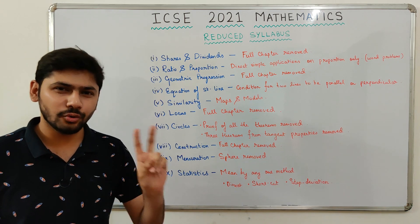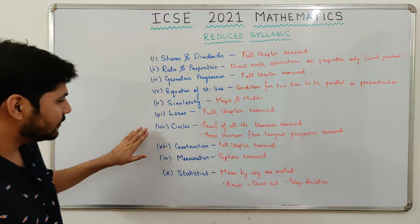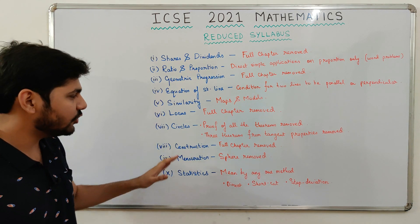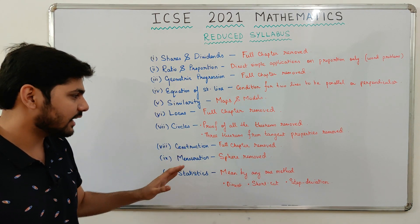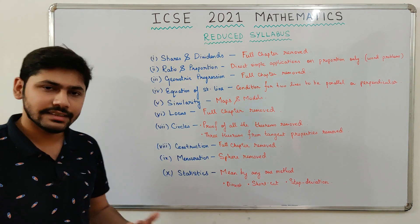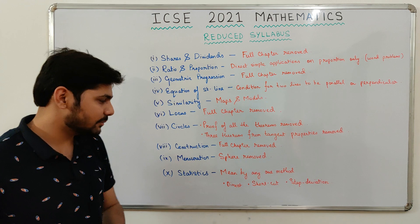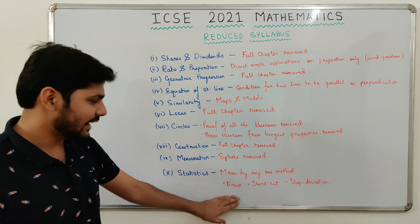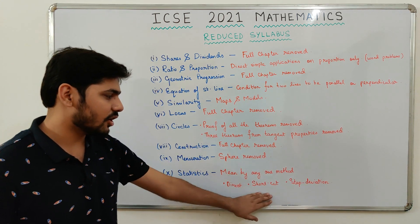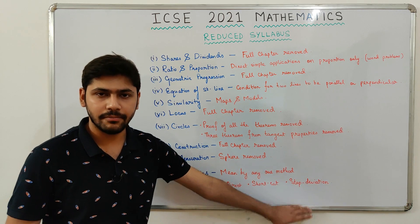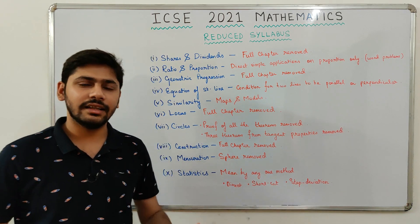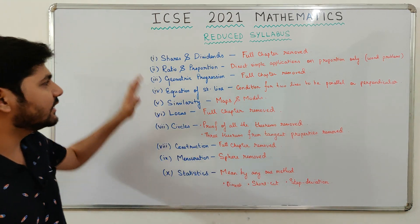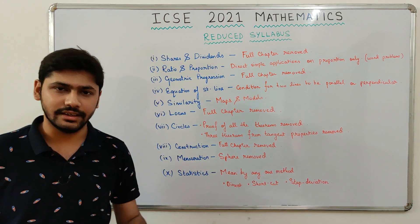So that was the reduced syllabus for the ICSC 2021 Mathematics Board Examination. To summarize: it is better to study all theorems in the chapter Circles, and better to know all three methods — Direct, Shortcut, and Step Deviation — to calculate mean. Everything else listed can safely be excluded from study.